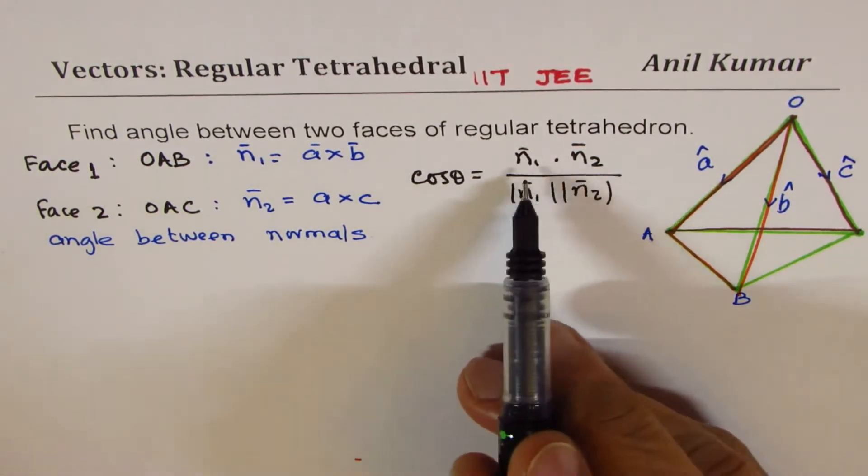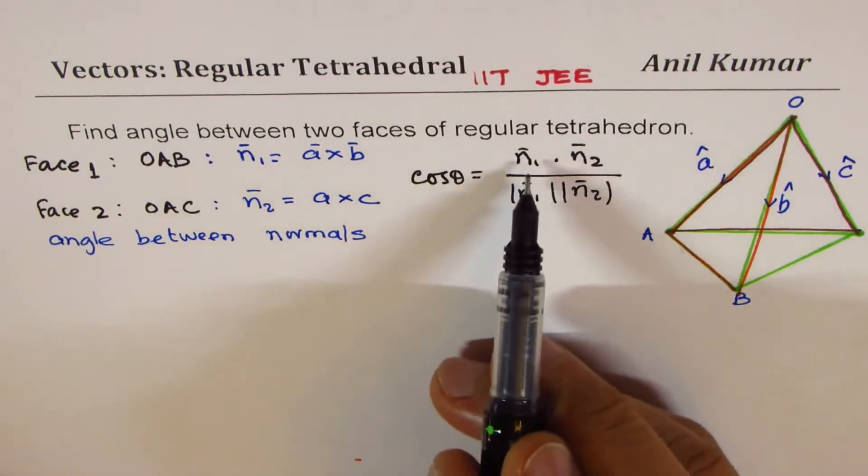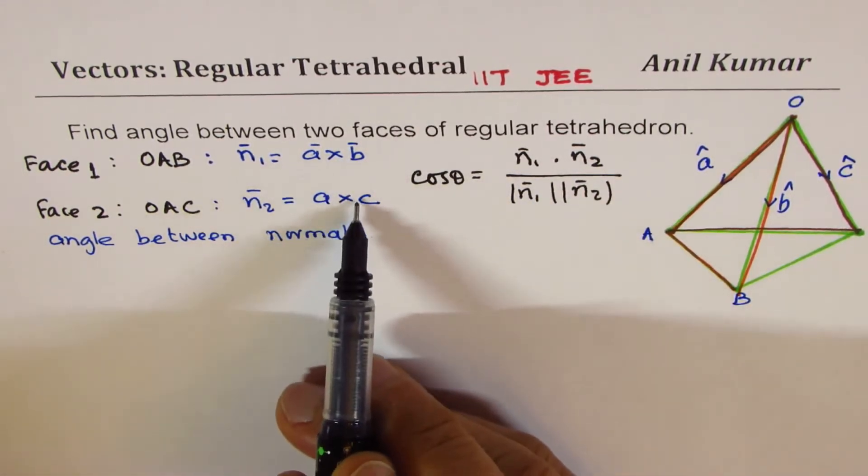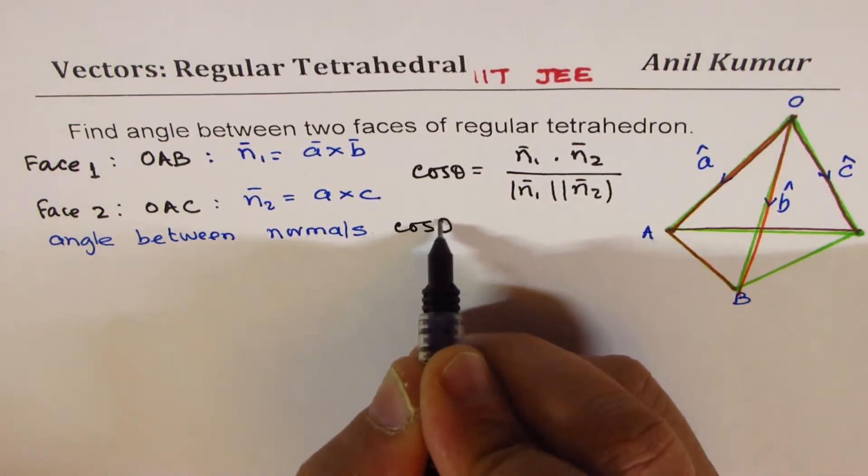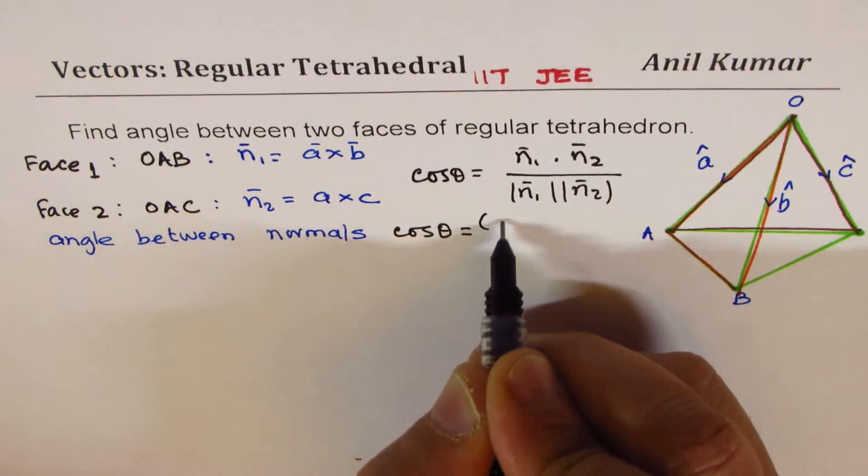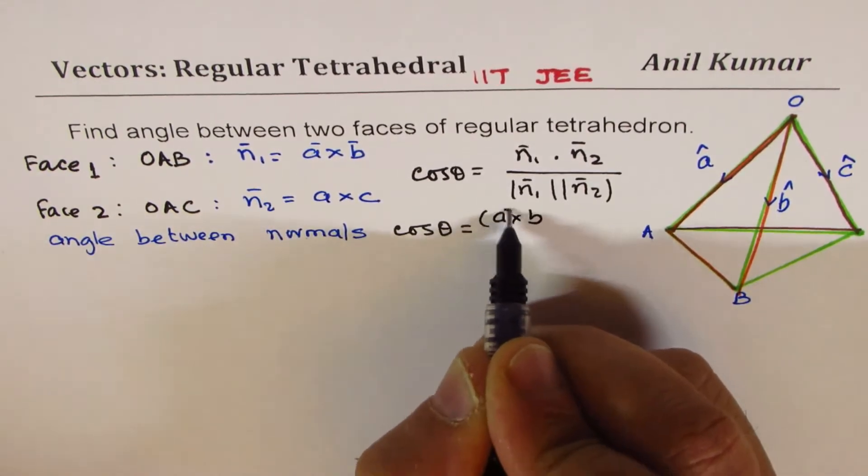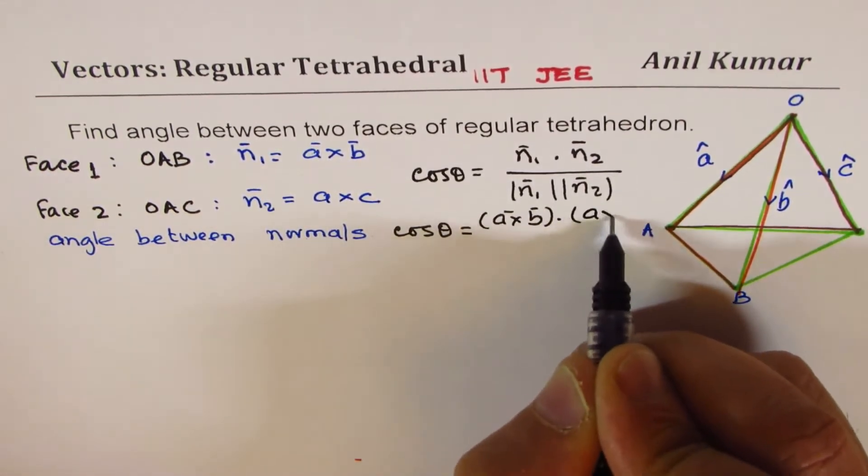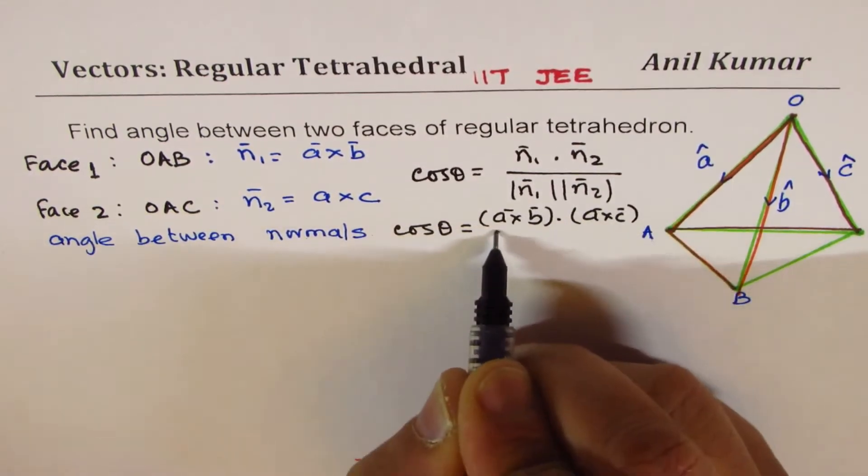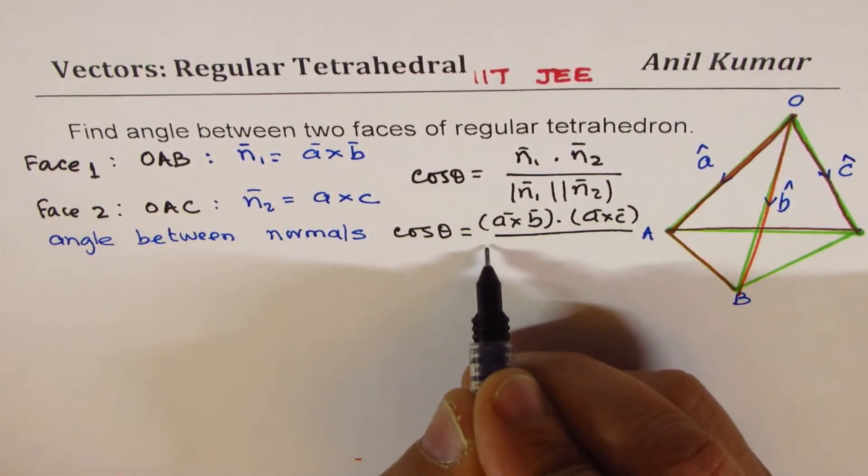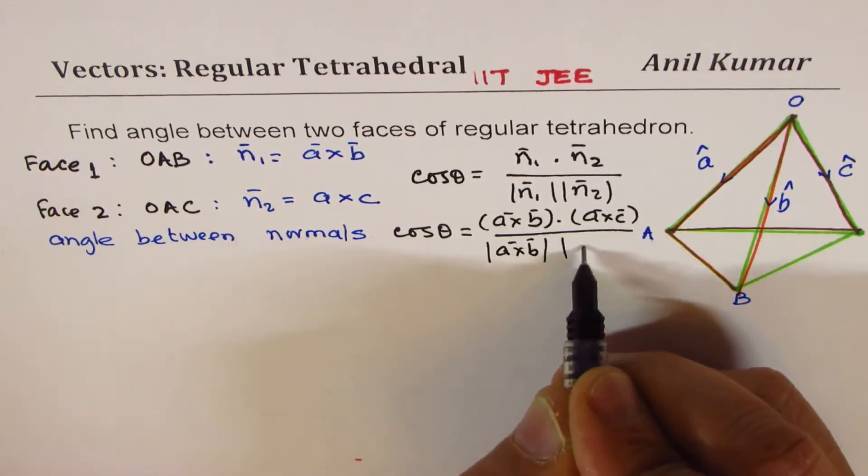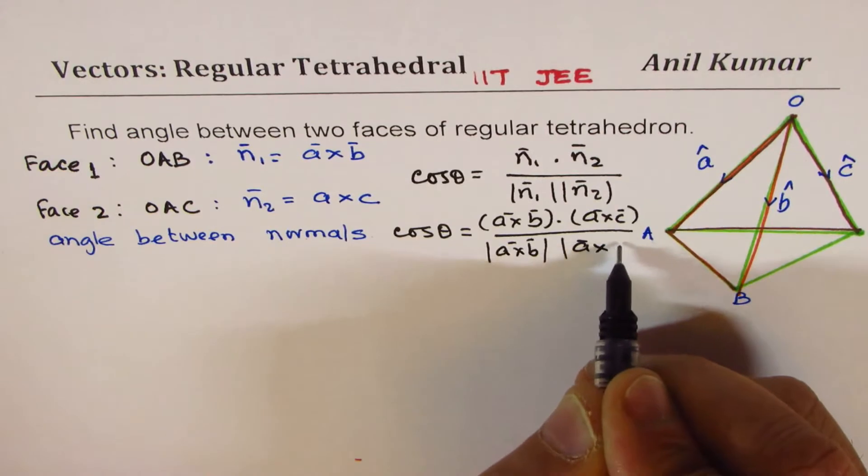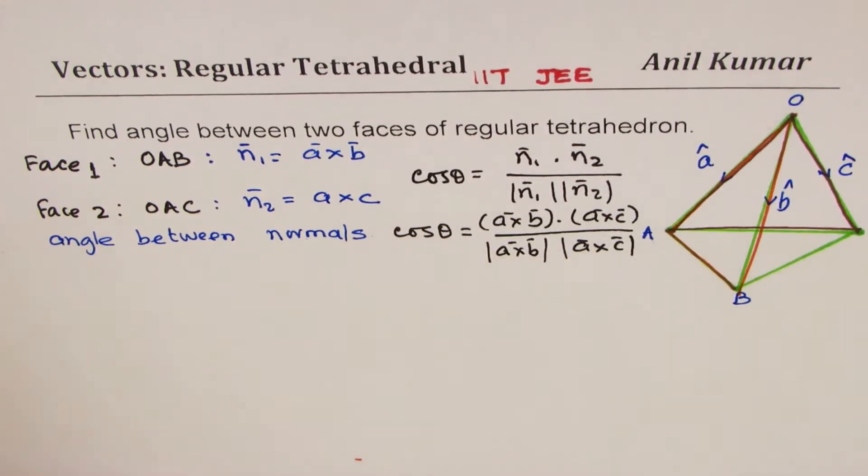Now there is a complication here. N₁ and N₂ are cross products. So basically what we have here is cos θ equals (A×B)·(A×C) divided by |A×B| times |A×C|.